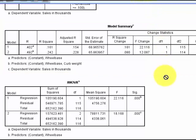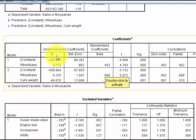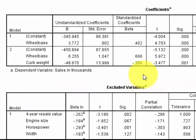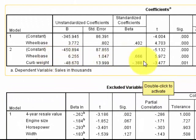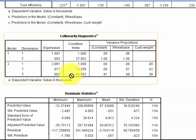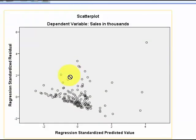Let's go down to the coefficients box. Because both of these variables are significant, we look at the second model. The beta weights tell us that wheelbase is the best predictor — it's pretty big — and curb weight is the second predictor. They're both significant. That's basically it with stepwise.